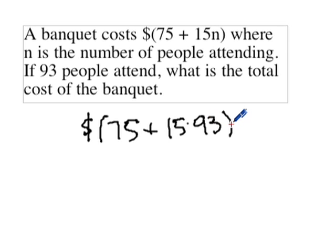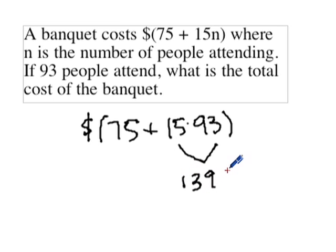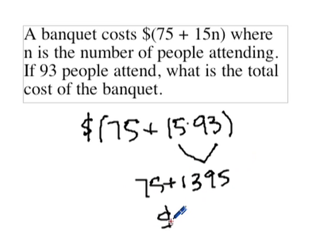To get the right answer we have to follow the order of operations. Order of operations says multiplication happens before addition, so we multiply 15 times 93, which equals 1395. We then add 75 to that and we get $1,470.